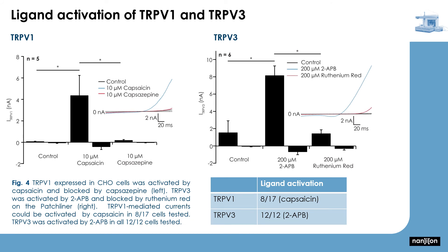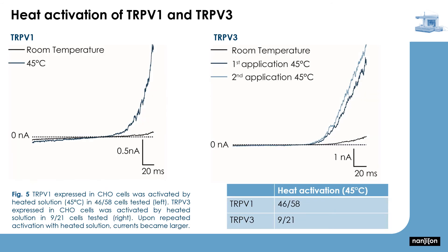Finally, we recorded TRPV1 and TRPV3 using either ligand or heated solution. Capsaicin was used to activate TRPV1, and this was blocked by capsazepine. 2-APB was used to activate TRPV3, and this was blocked by ruthenium red. Both TRPV1 and TRPV3 could be activated by heated solution at 45°C.